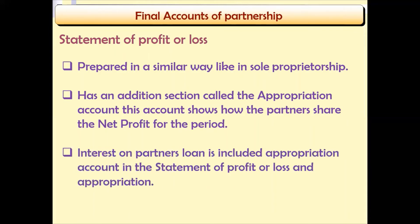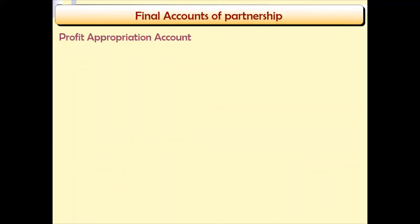Interest on partners' loans is included in the appropriation account as interest on loan from the partnership business. All the interests of the partners in the partnership business are recorded in the appropriation account, then transferred to the current account for that particular year. Let us look at the profit appropriation account.